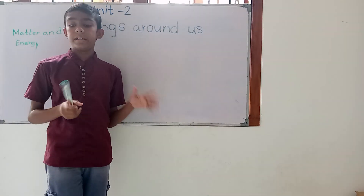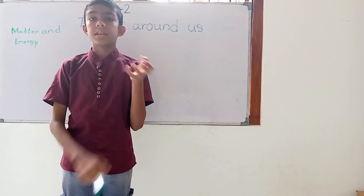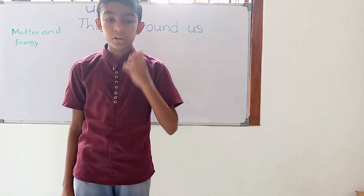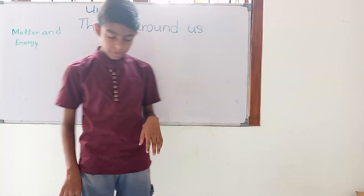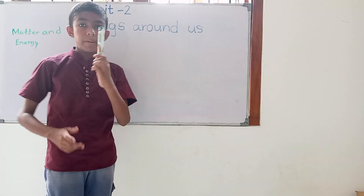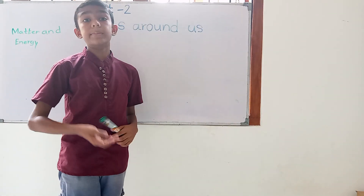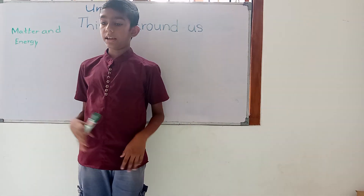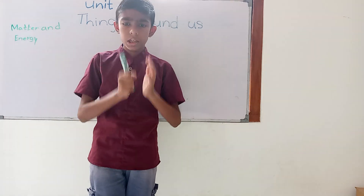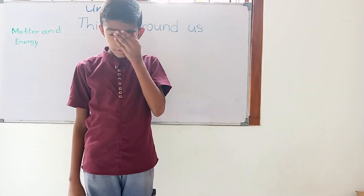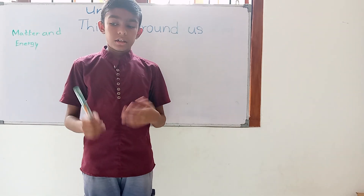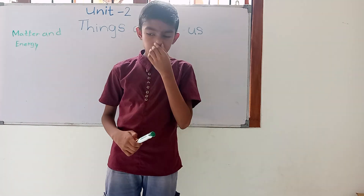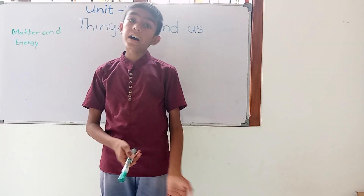Matter and energy. Now, what is matter? Matter is a thing with a mass and occupying space — such as this pen, an animal, a vehicle, water, and air. Now, what is energy? Things without a mass that do not occupy space are known as energy. For instance, light, fire, and sunlight.